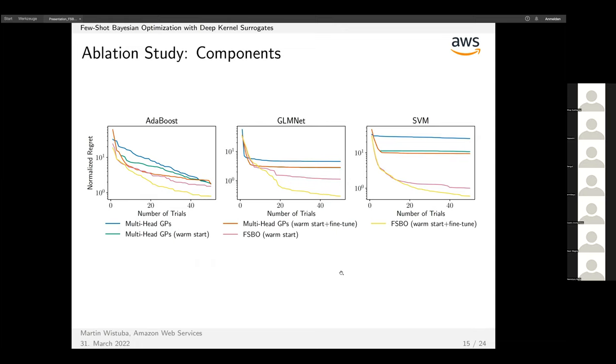Now there will be a few ablation studies to shed light on what the contributions of different components are. Multi-head GPs (close to ABLR) is our implementation with no meta-learning, one head for each task, and no warm starting. In the green line, when we add warm starting, that improves as one would expect.